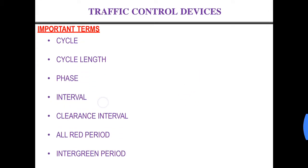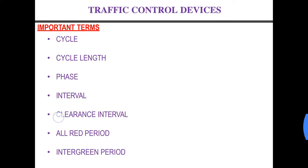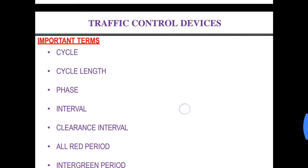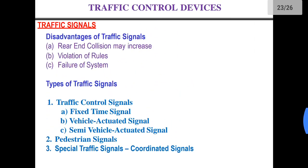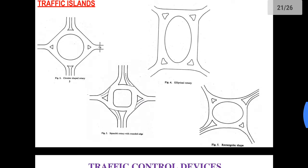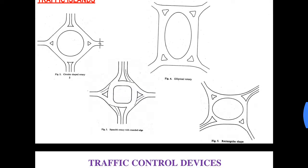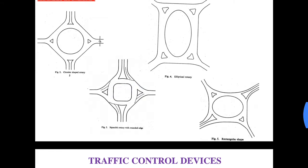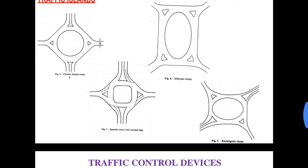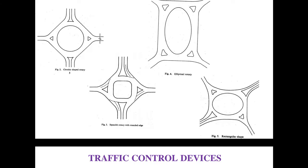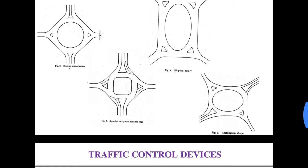Then there is interval. Interval is the time duration for a single phase. Clearance interval: it is the time for the vehicles who have already entered the intersection to cross the intersection. So it is nothing but the amber time — it is the time in which the vehicles who have already entered the intersection need to cross that intersection.